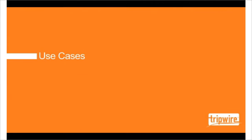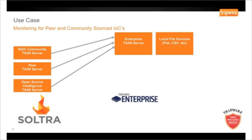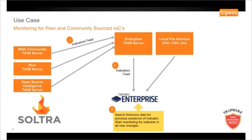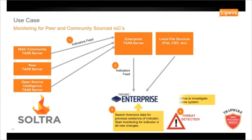We'll now go through a few use cases on how threat intelligence can be integrated into Tripwire. In this use case, we use community-sourced indicators of compromise from partners such as Sultra. Indicator feeds are fed into an internal TAXII server hosted on the Tripwire Enterprise console. Scans can then be initiated against stored data from previous scans, as well as starting to monitor for new indicators or threats in new changes. As soon as a threat is detected, Tripwire will drive a workflow to assist the user to investigate and remediate the compromised system.